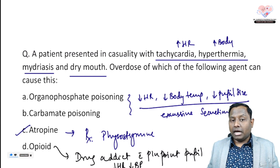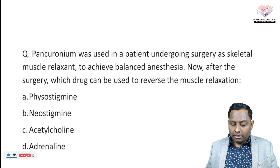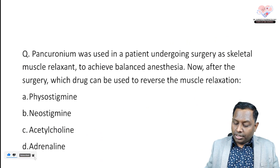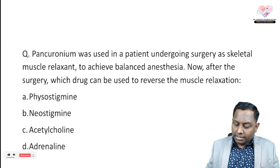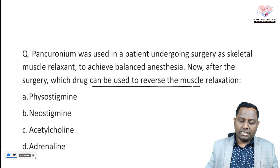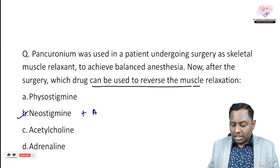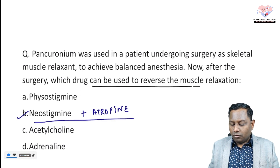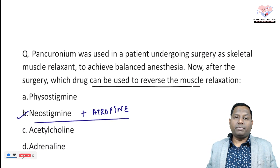Last question: pancuronium was given to a patient undergoing surgery as a skeletal muscle relaxant for balanced anesthesia. After surgery, which drug will be given to reverse the muscle relaxation? We are going to use neostigmine, and we always add atropine to mask the muscarinic side effects. So the correct answer is B — neostigmine with atropine.